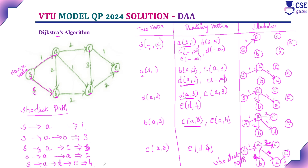This is the final shortest path you will get. You need to follow all the complete steps and finally provide the path from the source vertex to all other vertices with the distance — only then will you get full marks. Don't skip any steps.